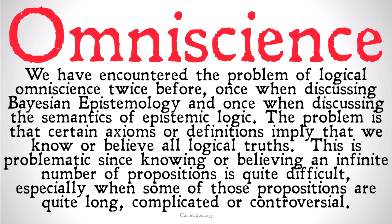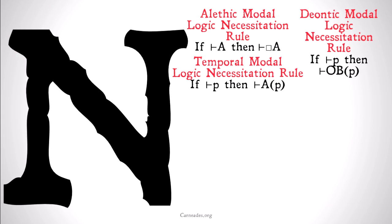We've encountered the problem of logical omniscience twice before: once when discussing Bayesian epistemology, and once when discussing the semantics of epistemic logic earlier in this series. The problem is that certain axioms or definitions imply that we know or believe all logical truths. This is problematic since knowing or believing an infinite number of propositions is quite difficult, especially when some of those propositions are quite long, complicated, or even controversial. Certain axioms require us to believe all logical truths, when it seems that we are unable to or simply do not.